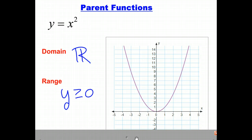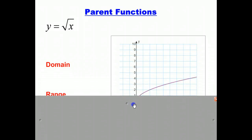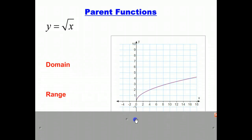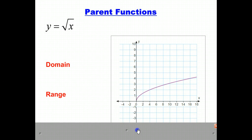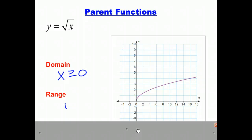Our third parent function is y equals square root of x. The graph looks like this. The domain of y equals square root of x, as you can see, is x values that are greater than or equal to 0, and our range values are numbers that are also greater than or equal to 0.